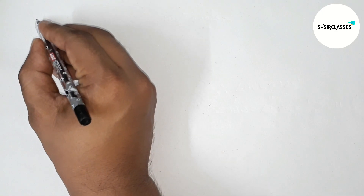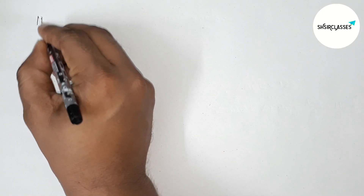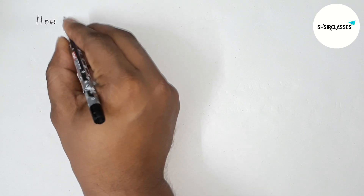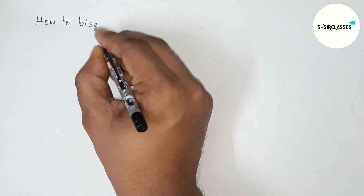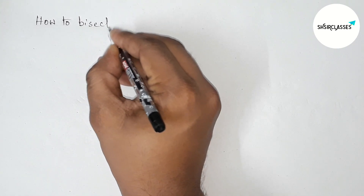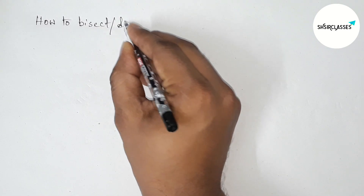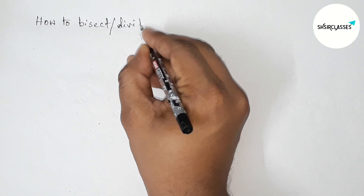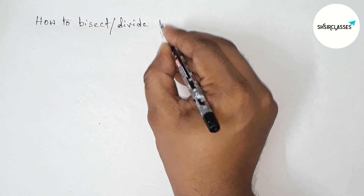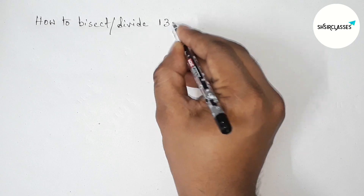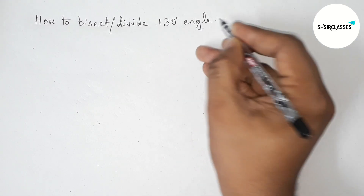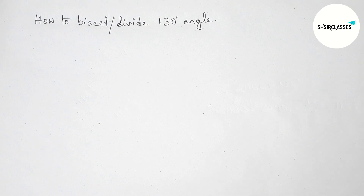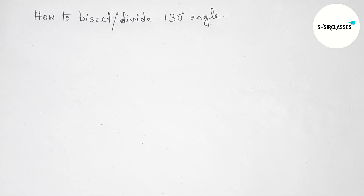Hi everyone, welcome to SI Share Classes. Today in this video we have to bisect or divide a 130 degree angle in an easy way. Please watch the video till the end. Let's start the video.